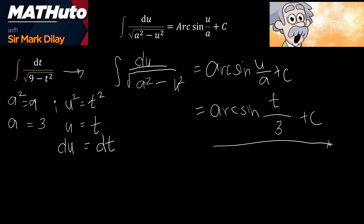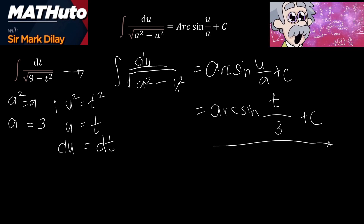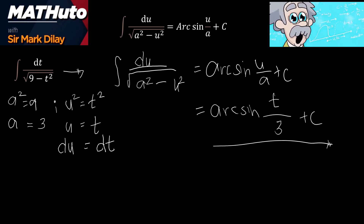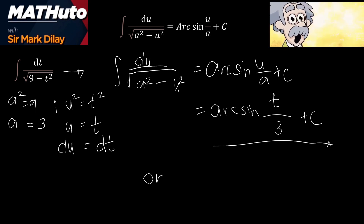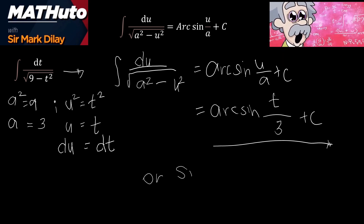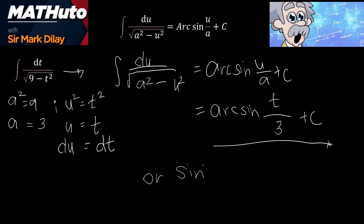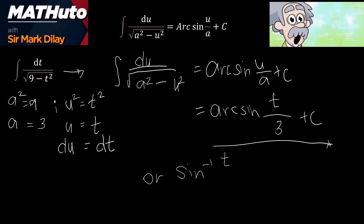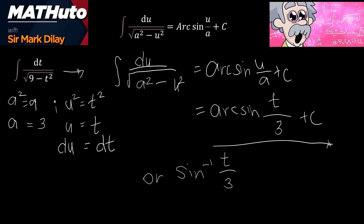Or, simply, we can write this as: sine raised to negative 1 of (t/3) plus C.